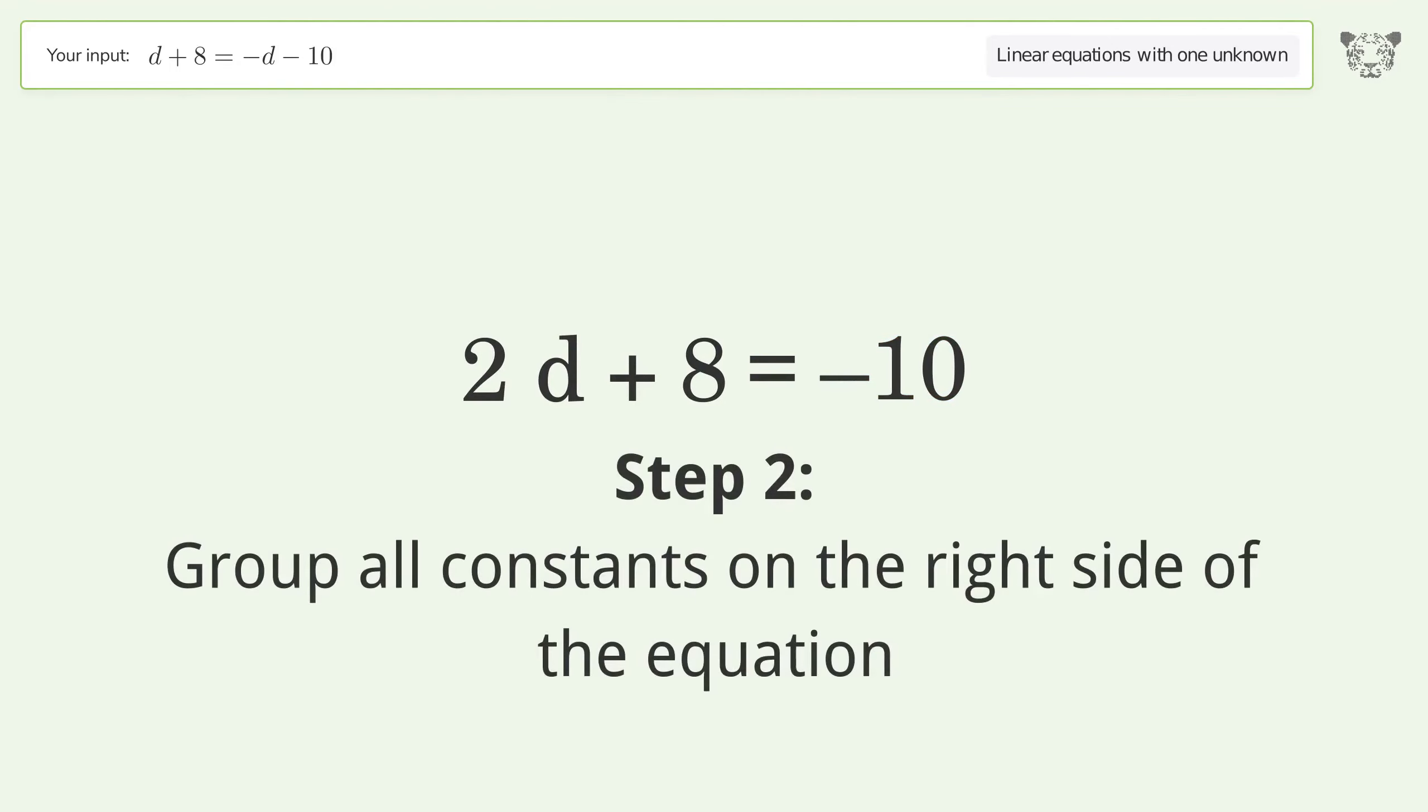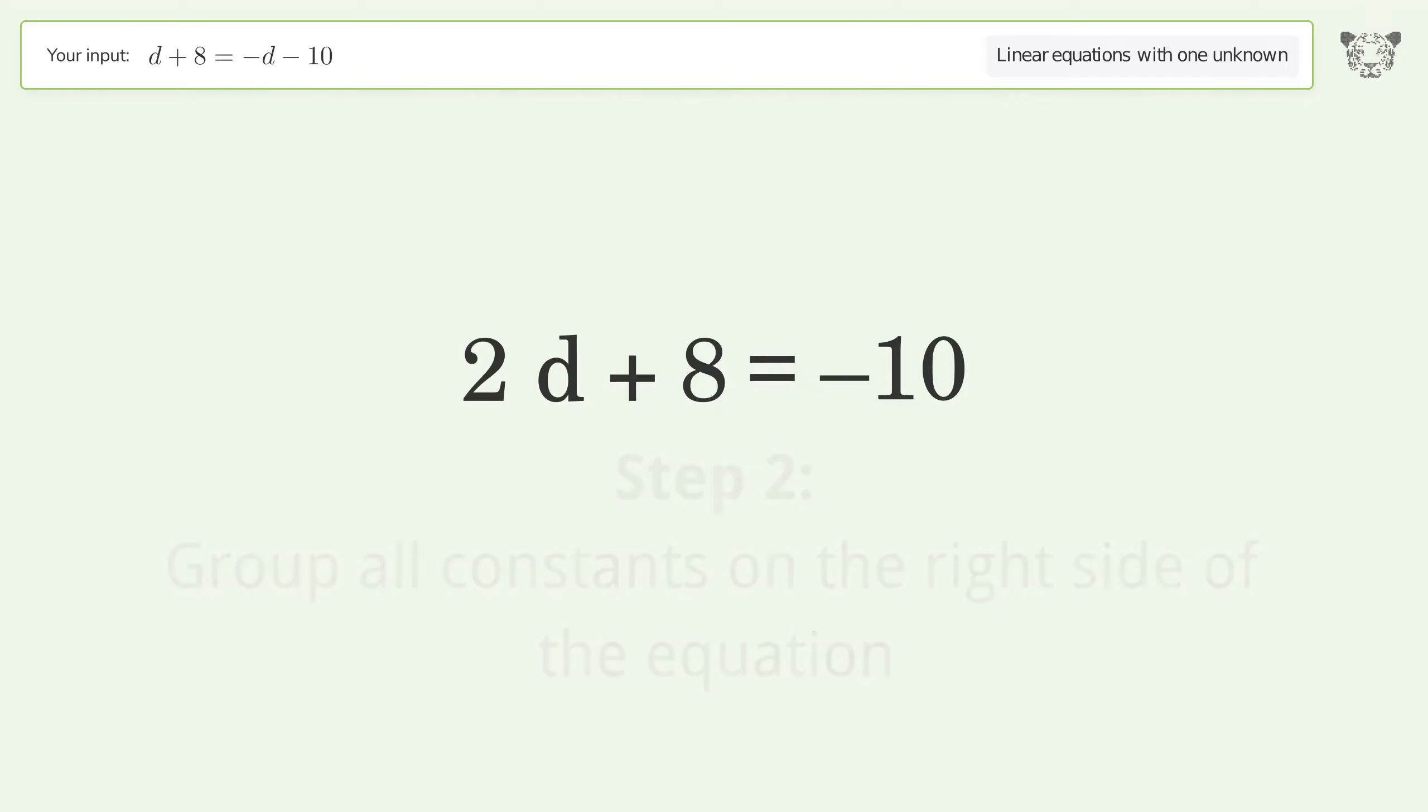Group all constants on the right side of the equation. Subtract 8 from both sides. Simplify the arithmetic.